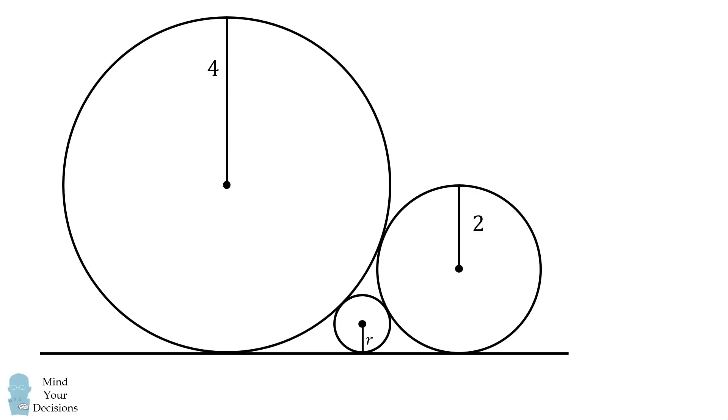Now we can create three different right triangles by connecting the centers of these circles. The first triangle will connect the center of this small circle to the center of the circle with radius of 4. This will be a right triangle. Its hypotenuse will be the sum of the two radii. It'll be 4 plus r. One of its legs will be the difference between 4 and r, so that'll be 4 minus r.